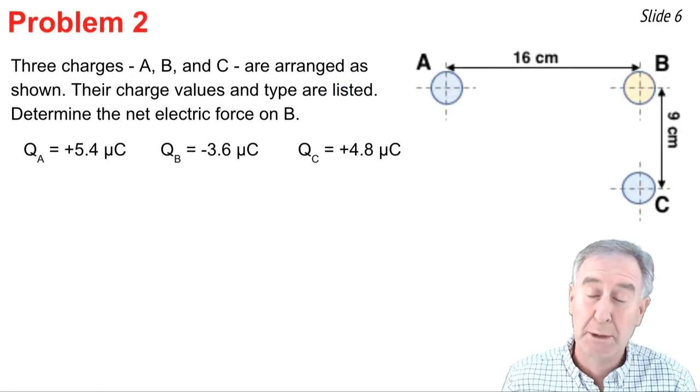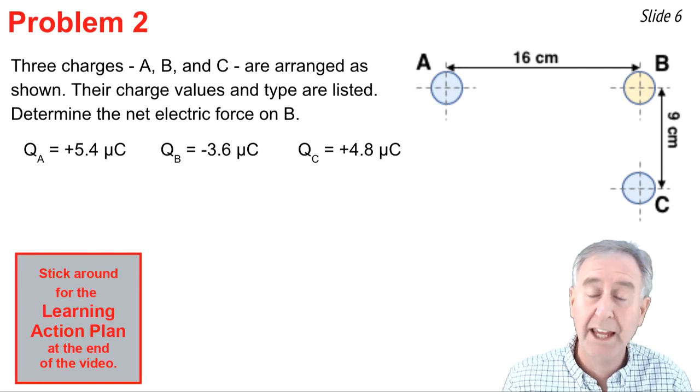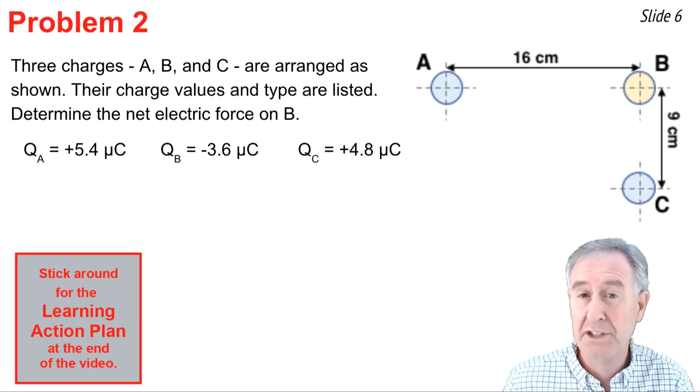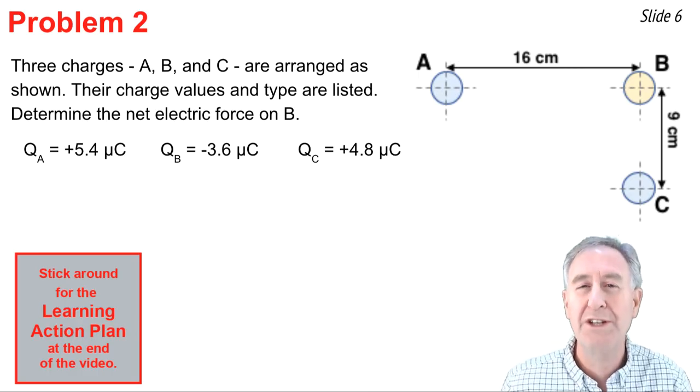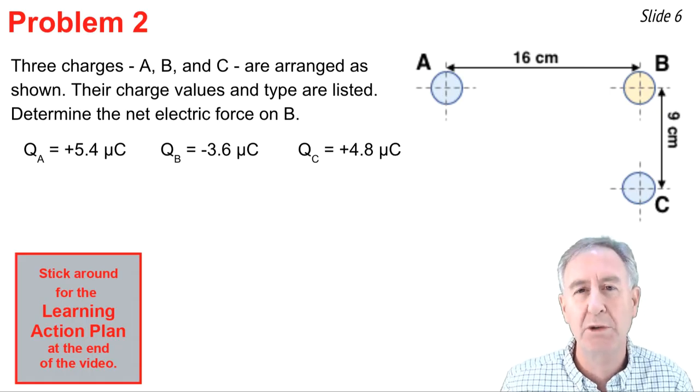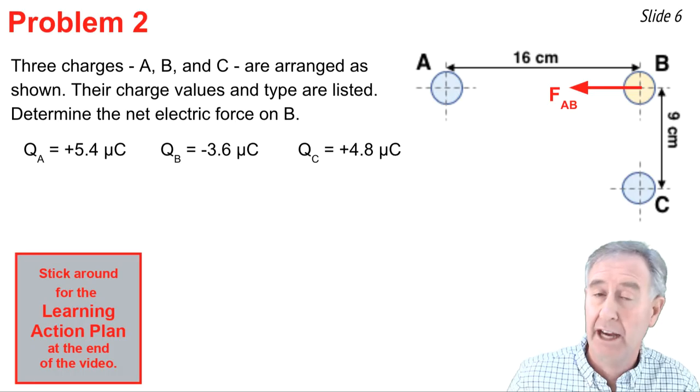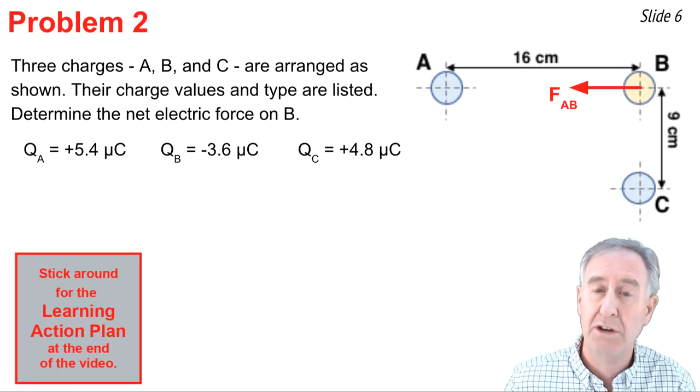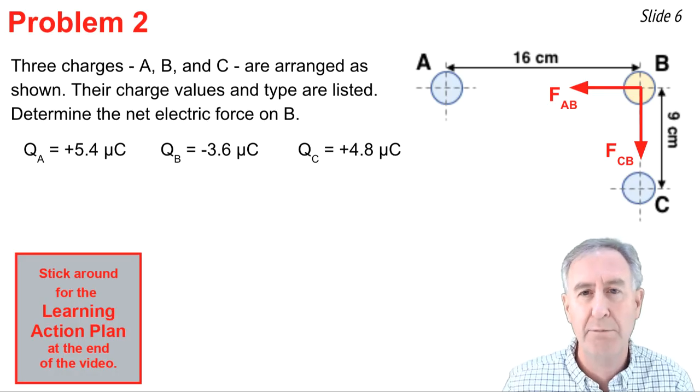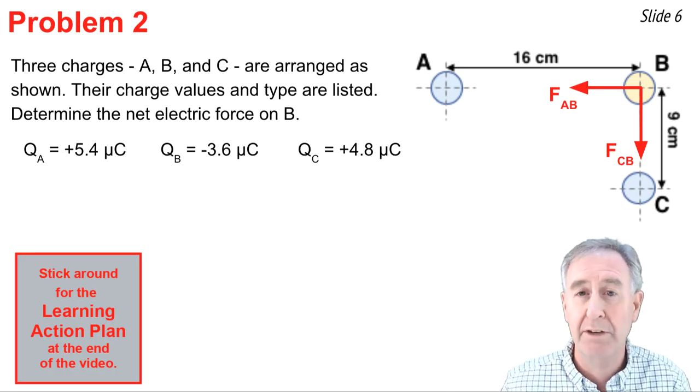This is a similar problem only this time the three charges happen to be forming a right angle to one another. It's charges A, B, and C and their values are given and their distance of separation are given. We wish to determine the net electric force on charge B. So we need to think in terms of what are the individual forces. There's the force of A pulling B to the left and then there's the force of C attracting B and pulling B downwards. We'll call these FAB and FCB and we can calculate them from the given information.